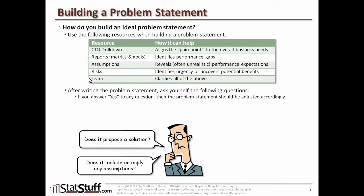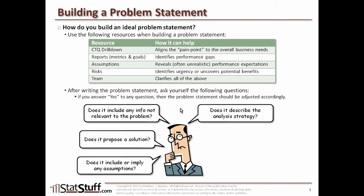Also, is there a solution proposed within the problem statement? If so, get that out of there — it has no purpose being in the problem statement. Does it include any information that's not relevant to the problem? If so, don't include it. Maybe it's important to know and you can identify it in an appendix in your storyboard or some other area, but if it's not relevant to the actual symptoms you're trying to communicate, get it out. Does it describe the analysis strategy — how you're going to try to solve this problem? If it does, put it in a separate strategy area or description of how you're going to attack the problem.